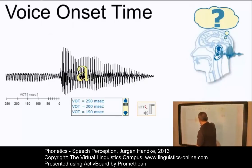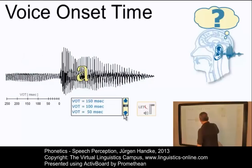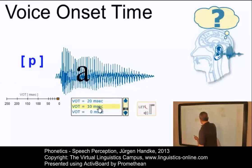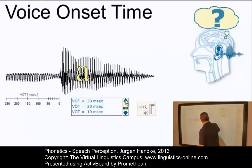If voice onset time is long — let's say 250 milliseconds — what do we perceive? Clearly, the voiced variant: 'bar'. Now, if by contrast we make it extremely short, let's say 10 milliseconds, we perceive 'par'. So, 10 milliseconds and the result is 'par'. What about 50 milliseconds? 'Bar' — it is still the voiced variant.